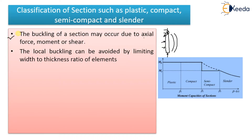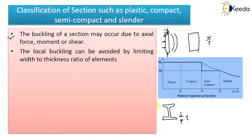The second point: local buckling can be avoided by limiting the width-to-thickness ratio of the elements. So if you want to avoid buckling, you can limit the b/t ratio. For example, if you have an I-section like this, the width is b, and if you limit this b/t ratio, then there are chances that your section will not buckle.